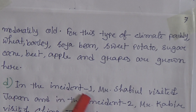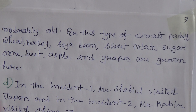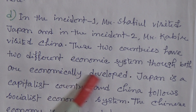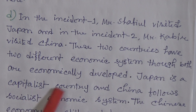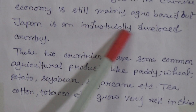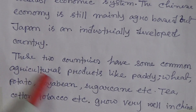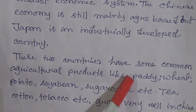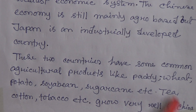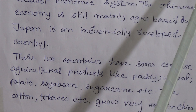Question two-d: In event one, Mr. Shupil visited Japan, and in event two, Mr. Kobe visited China. These two countries have two different economic systems, though both are economically developed. Japan is a capitalist country and China follows a socialist economic system. The Chinese economy is still mainly agro-based, while Japan is an industrially developed country. Both countries share some common agricultural products like wheat, potato, soybean, and sugar cane.